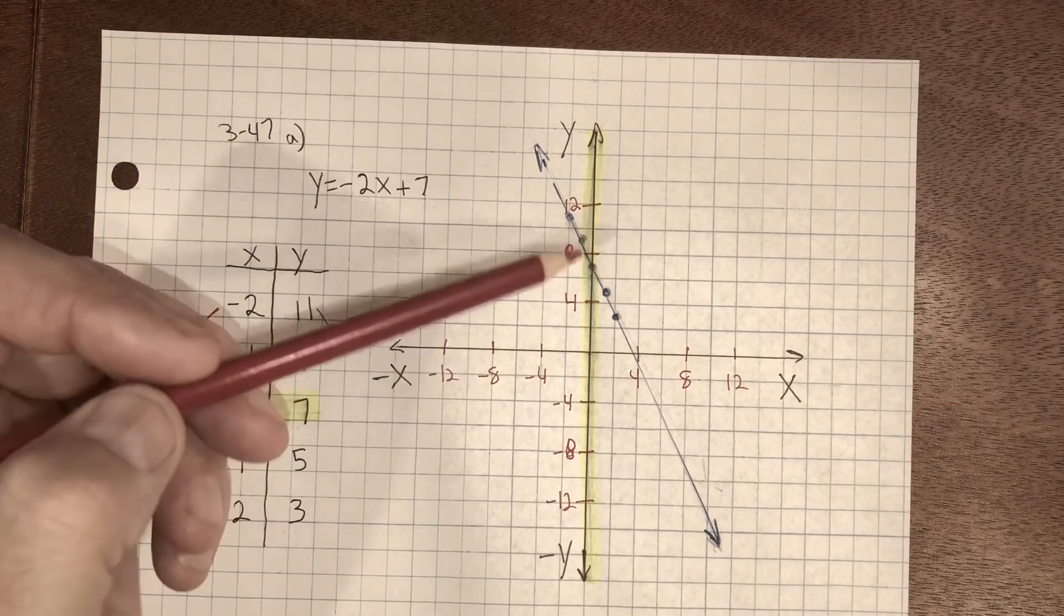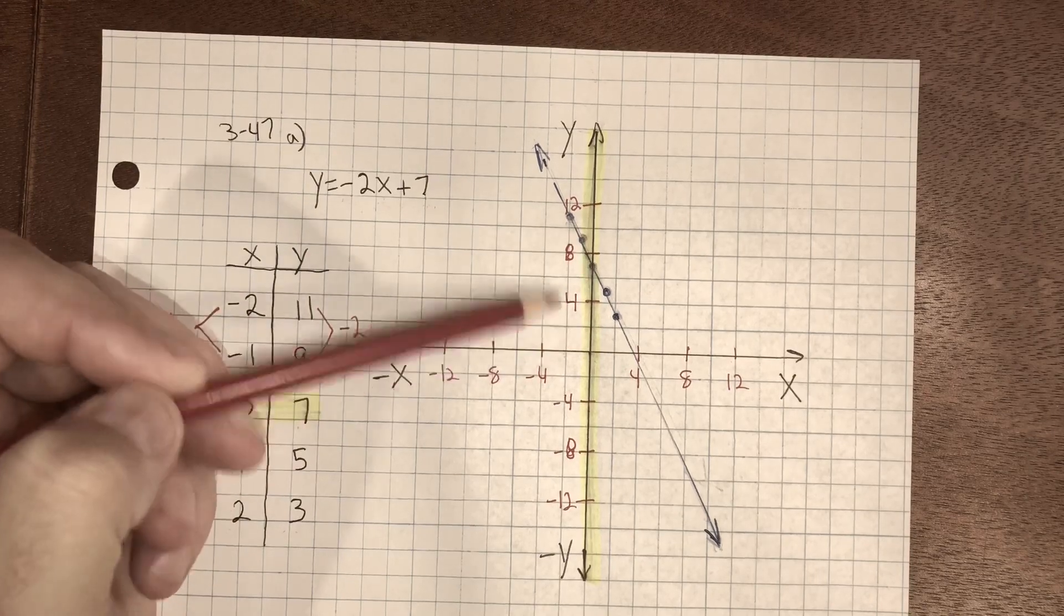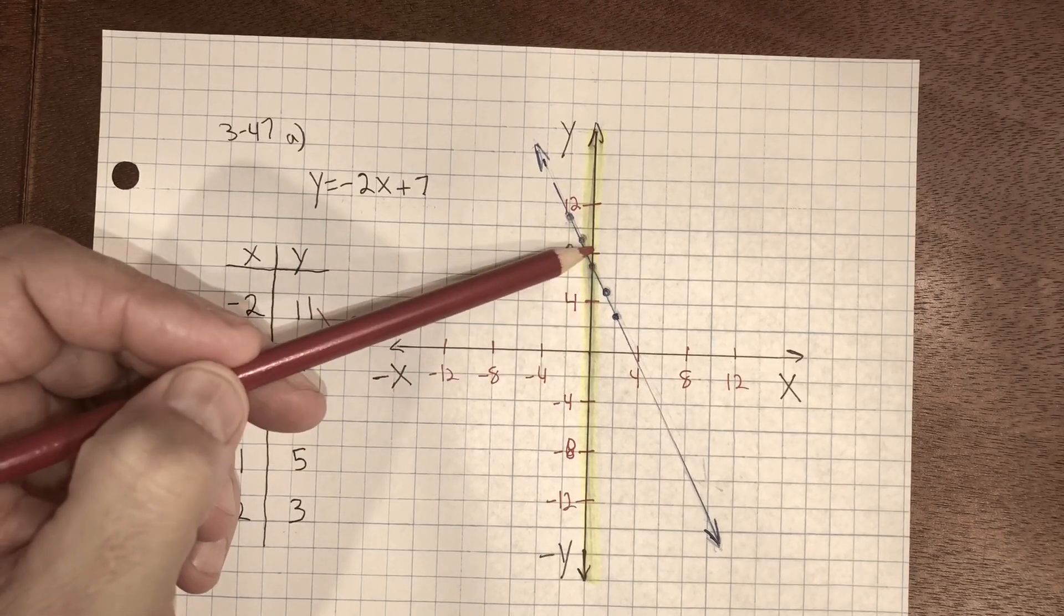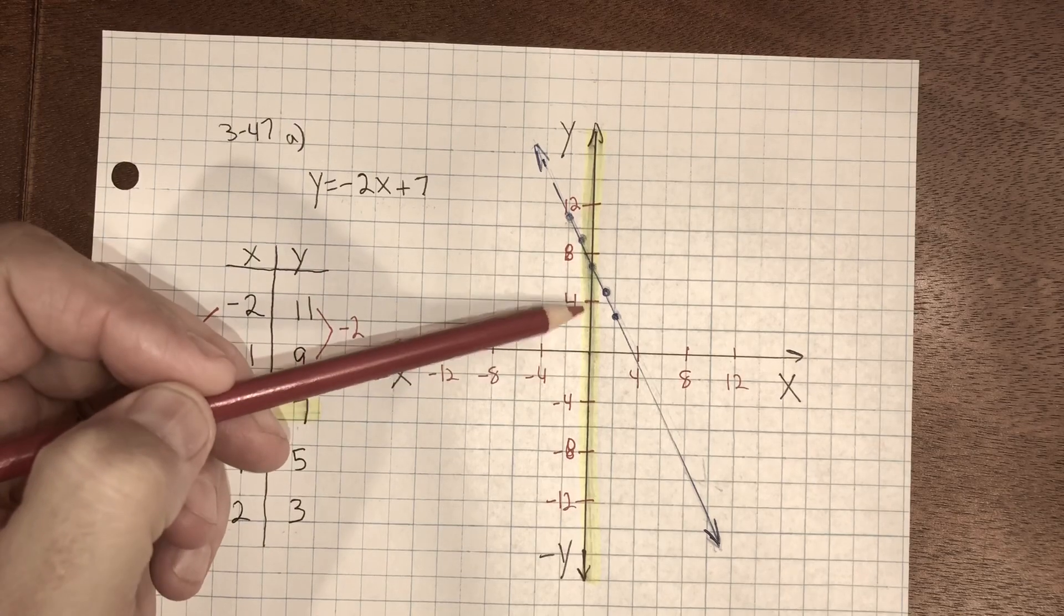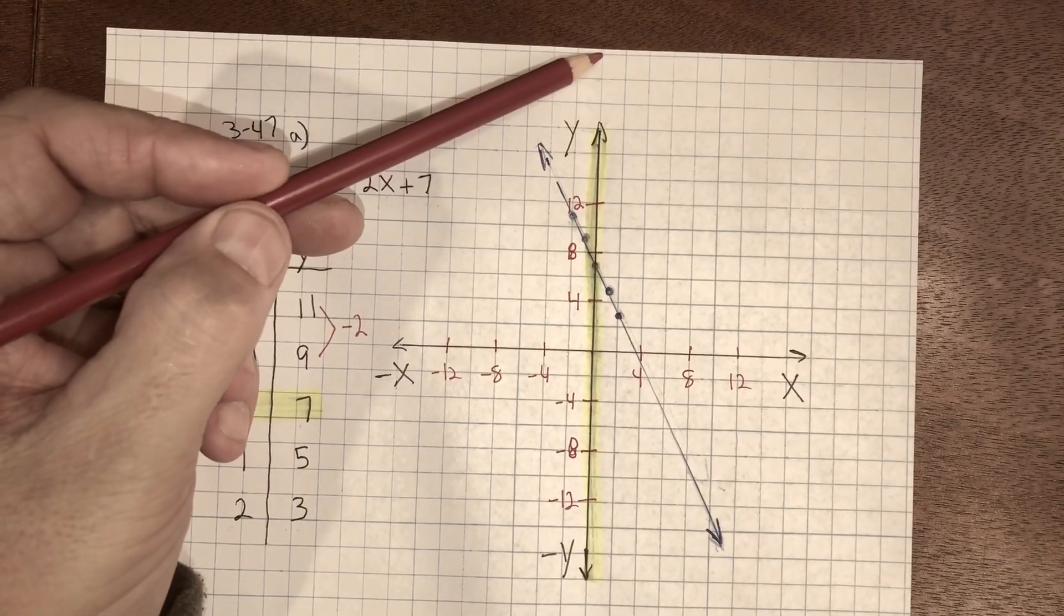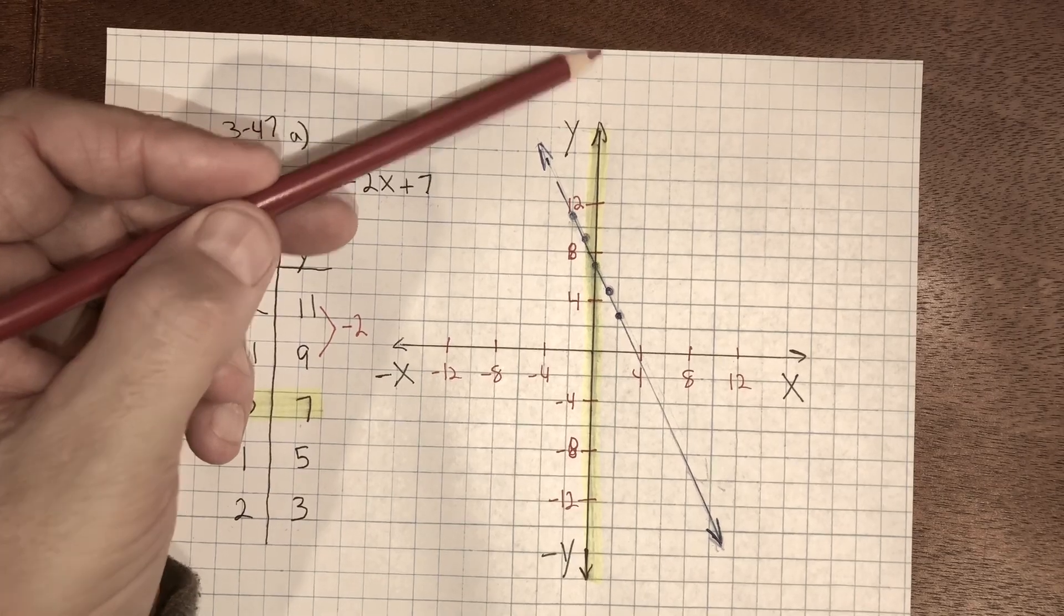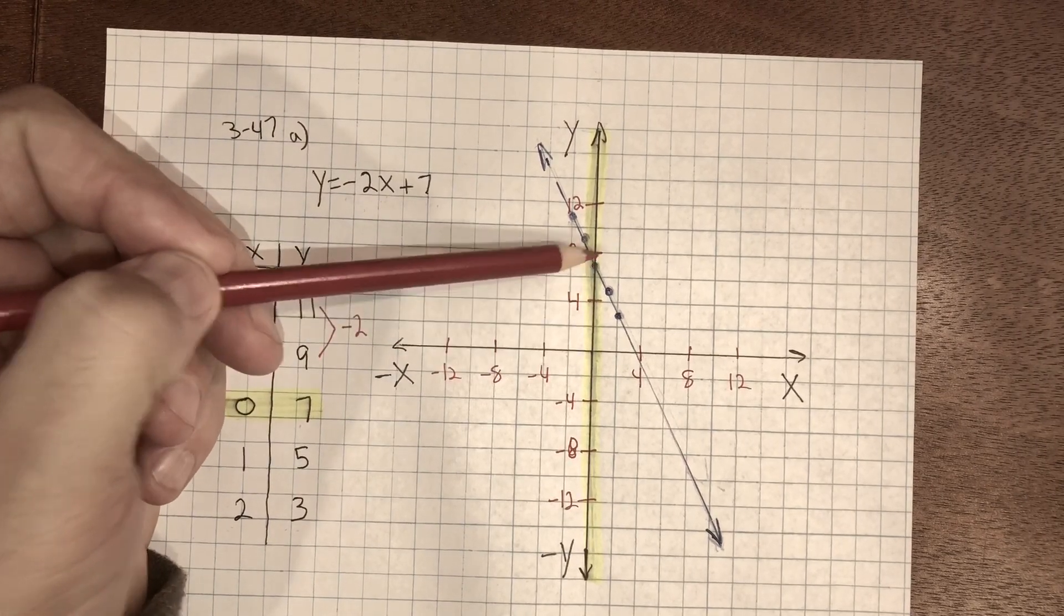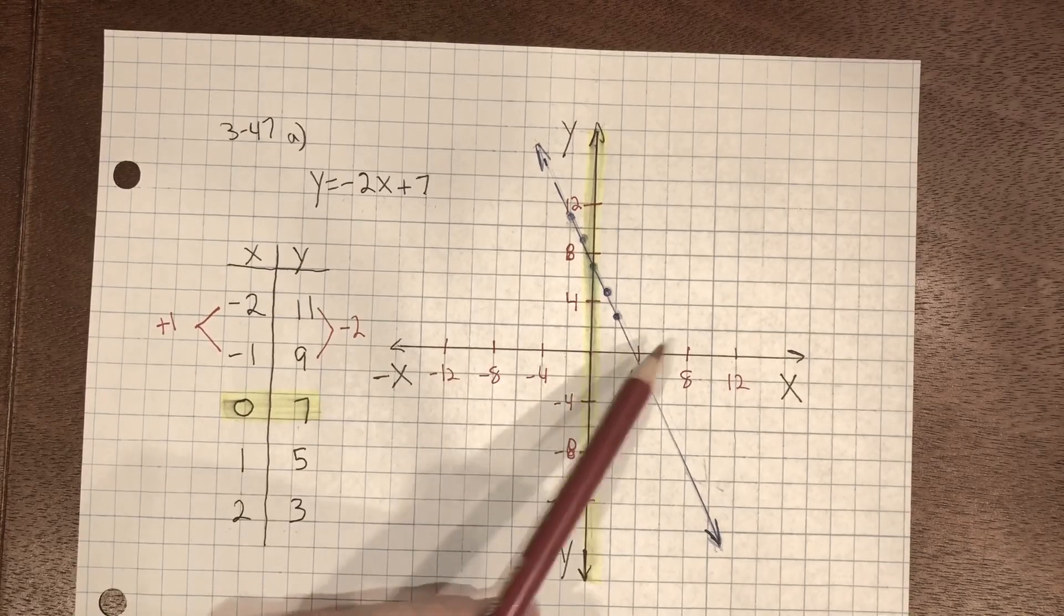You can see for the scaling I chose to go by twos. If I went by ones, my numbers would be almost off the paper. So I decided to scale it by twos. And I also did that for the x values.